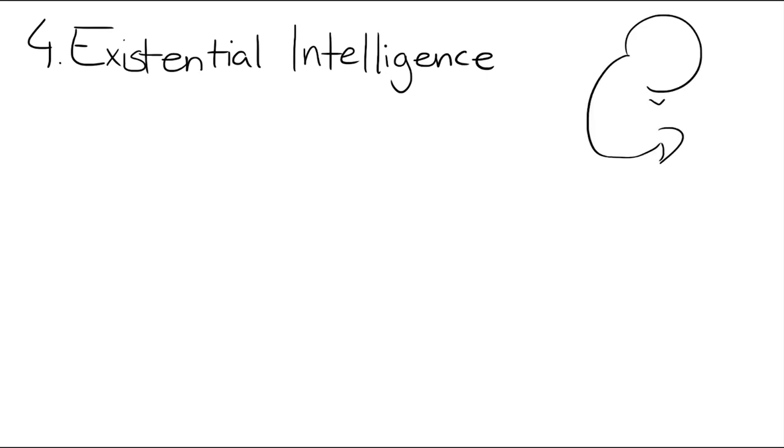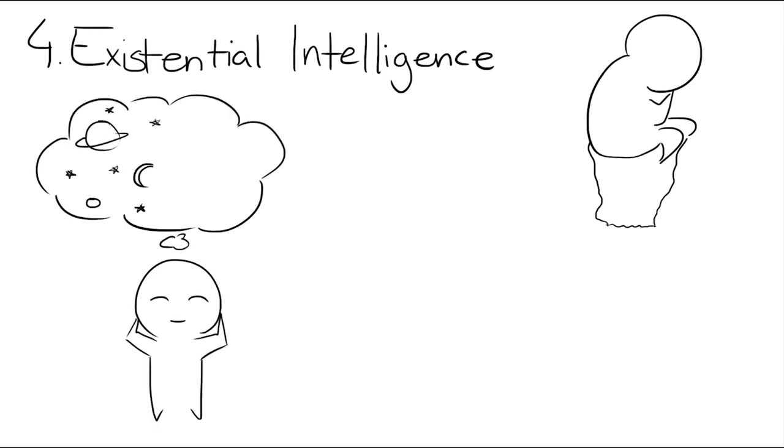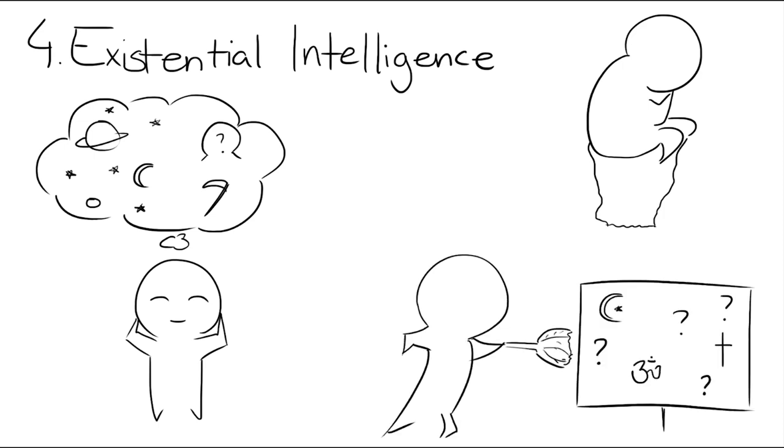Number four, existential intelligence. People with a high existential intelligence are good philosophical thinkers. They are good at philosophising and thinking about questions that might not have a real, definite answer. They have a sensitivity towards the deeper questions of life, and like challenging related concepts. They're not easily confused by their own feelings.